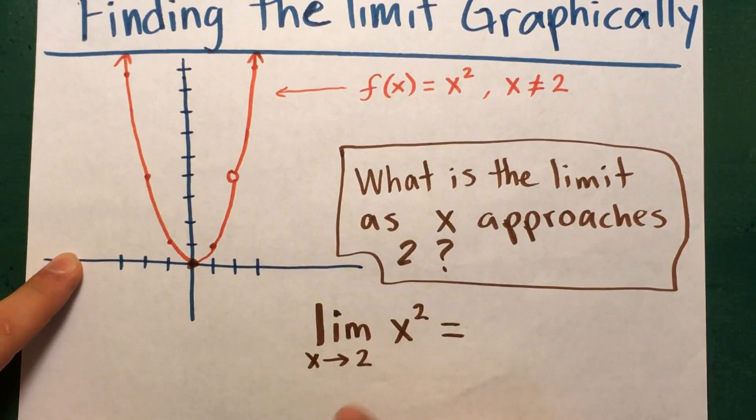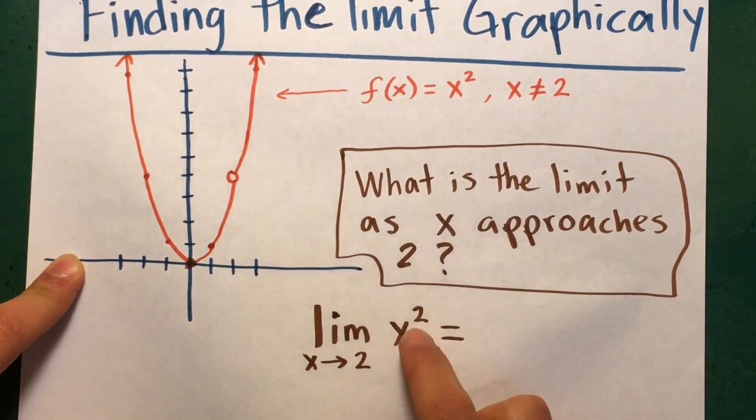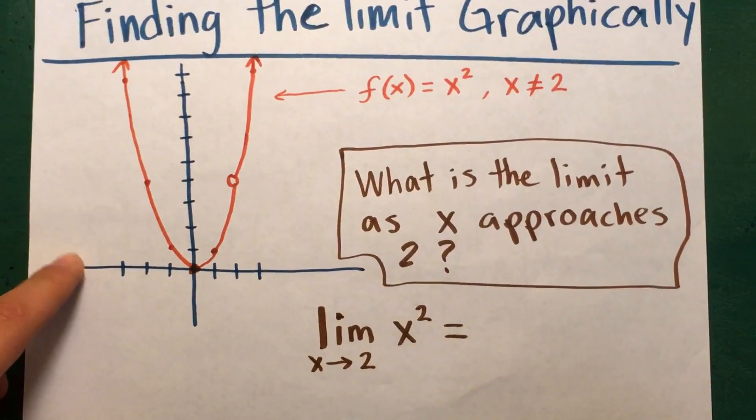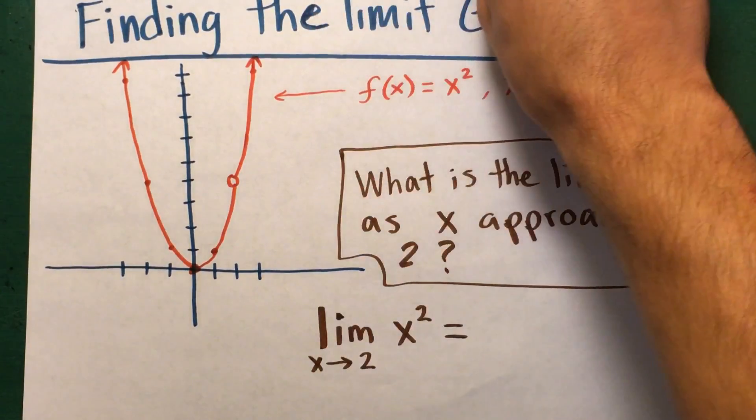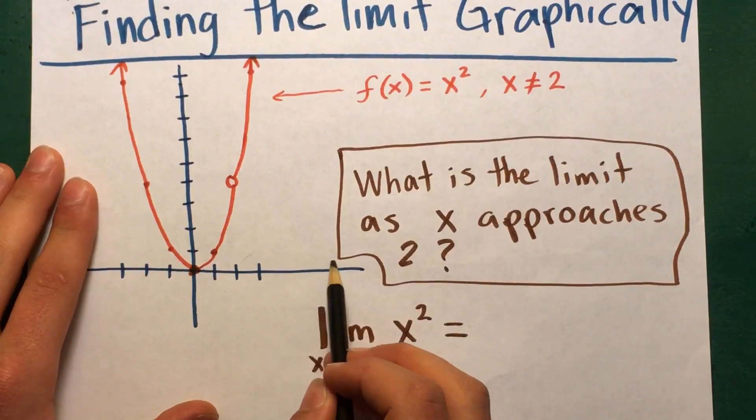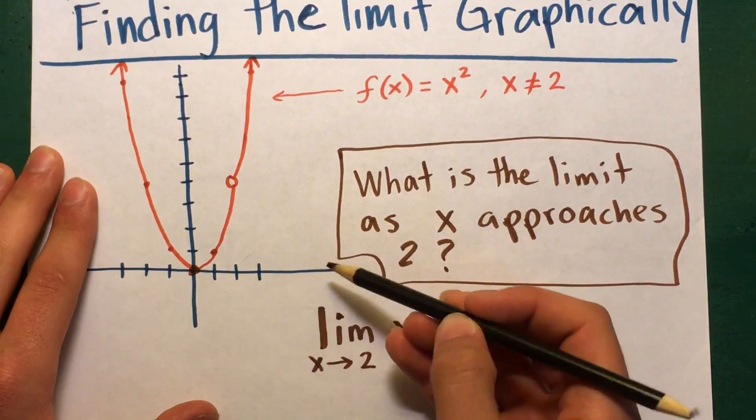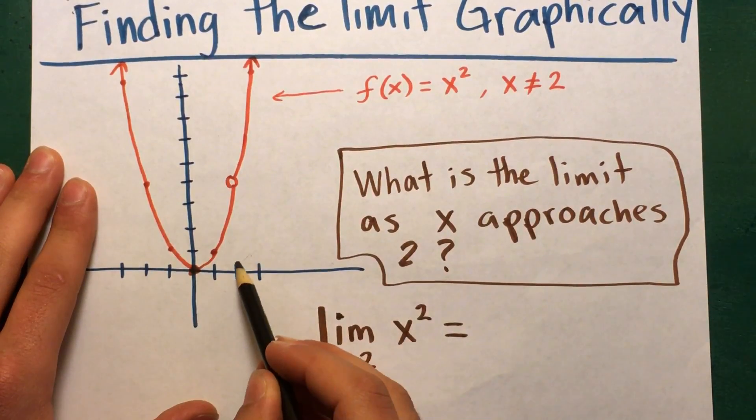Or you could say the question could be the limit as x approaches 2 in this function x². So if you look down here, if you see this x coming from the right to the left, this is 2 right here. So as x approaches 2, you see on the function it's approaching the hole.